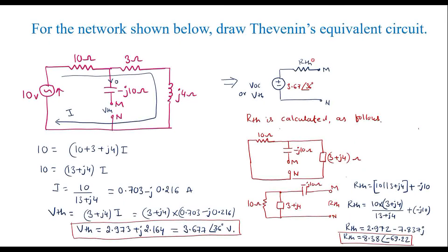So therefore, RTH is equal to 8.38 at an angle of minus 69.22 degrees, or in rectangular form its value is 2.972 minus 7.83J. This is Thevenin's equivalent circuit at terminals M and N. Thank you for watching.